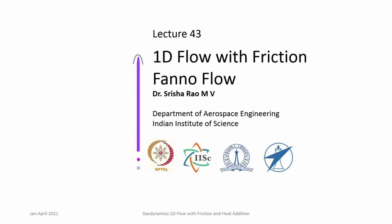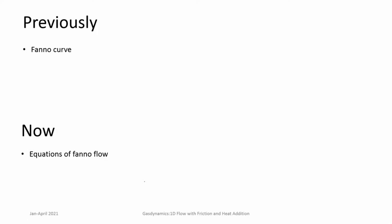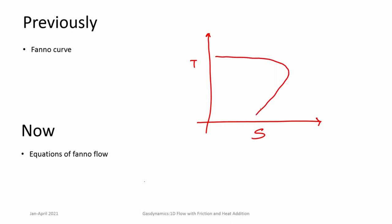We have been looking at 1D flows with friction, that is Fanno flow. We looked at the Fanno curve, which thermodynamically shows how these flows behave when starting from subsonic and supersonic flow. Then we looked at the equations of Fanno flow. Now we will look at these equations and come to the concept of what is known as frictional choking. Bear in mind — this is a very essential concept — whenever you look at Fanno flows, remember this curve. Qualitatively it looks like this: T0 is constant, and this is the way the TS diagram looks, with the maximum entropy point.